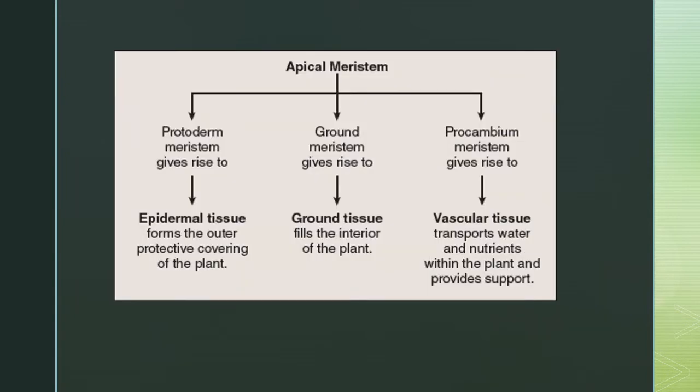Apical meristems are found in the embryo and at the tips of shoots and roots, and they are responsible for primary growth in plants.